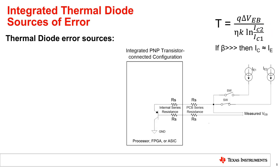While integrated thermal diodes are in an ideal location because they are located in the die itself, there are some sources of error that need to be accounted for. These include ideality factor variations, beta variations, series resistance, and noise injection. The ideality factor of a BJT is a measurement of how closely the BJT follows the ideal transistor model. Since ideality factor can vary from part to part, this variation will introduce temperature errors if not accommodated for. Most remote temperature sensors have an ideality factor correction register to account for this variation.